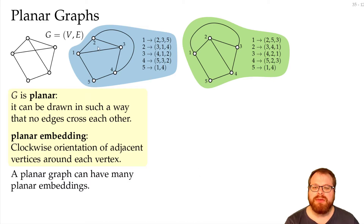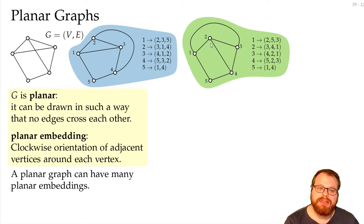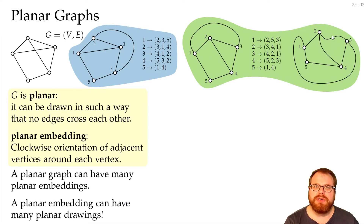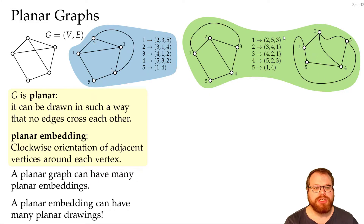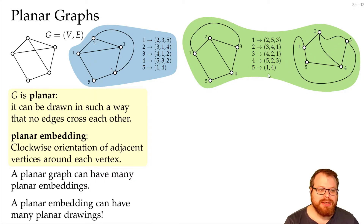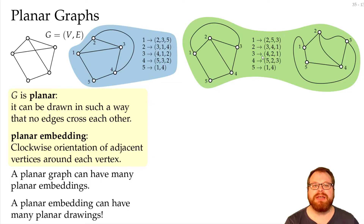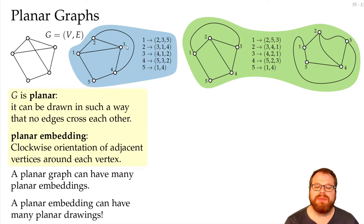So now we have two different embeddings of this planar graph. But a planar embedding can also have many different drawings. We don't have to draw it like this — we can move the vertices around, we can change the curves. Here I even flip this curve to the other side, and it's still this combinatorial embedding. So for every embedding we can have an infinite number of drawings, and a planar graph can have many different embeddings.